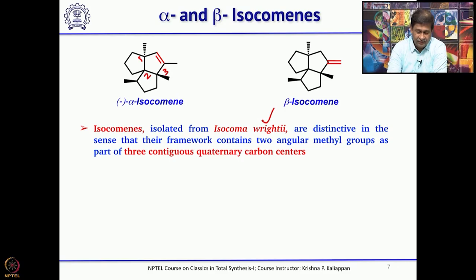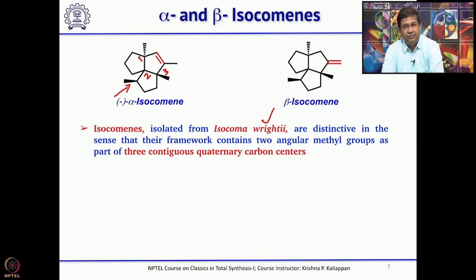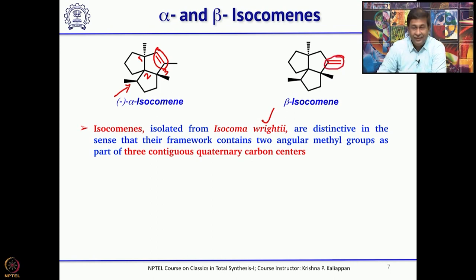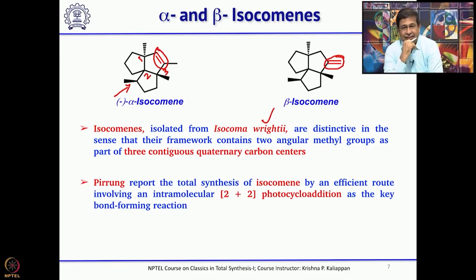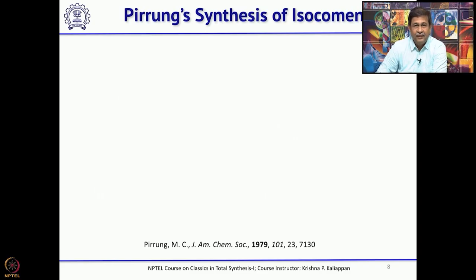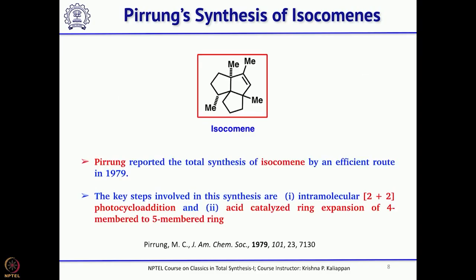The difference between alpha and beta isocomane is the position of the double bond. In the case of alpha isocomane, you have an internal double bond, whereas in the case of beta isocomane, you have an external double bond. Let us start with the synthesis of isocomane by Michael Paquette — he used an intramolecular [2+2] photocyclization as the key step, and also a ring expansion under acidic conditions.